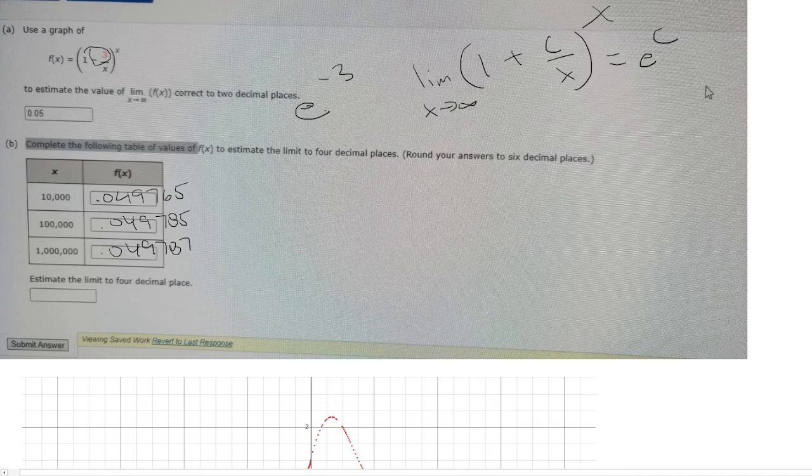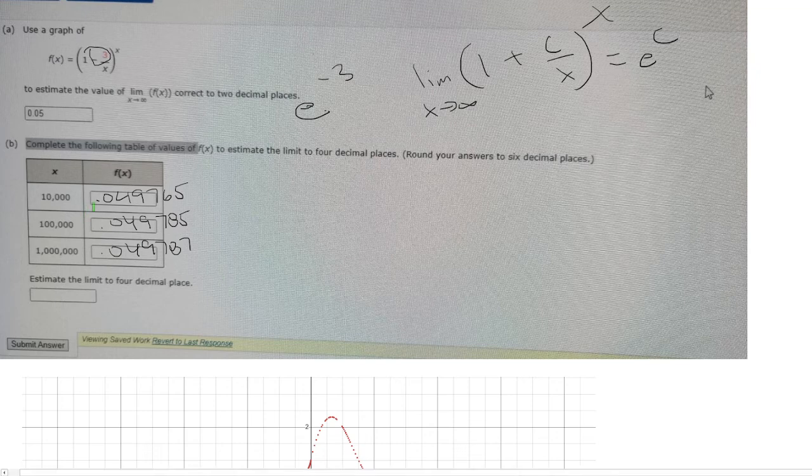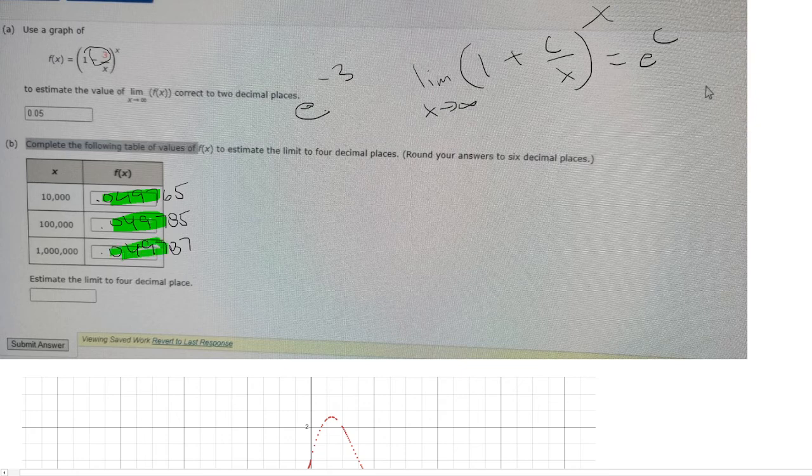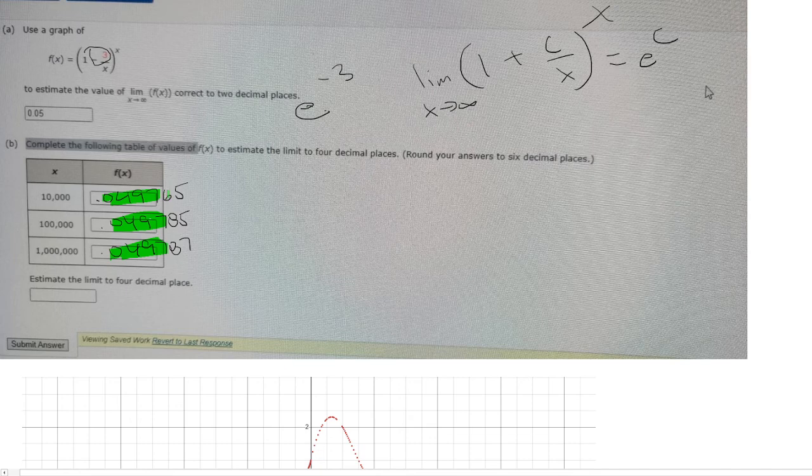So we want to estimate the limit to 4 decimal places. So we just look at the first 4 here. And we really need to round it. Notice what comes after the 4 decimal places, the 6, 8, and 8. So you would just round it up.